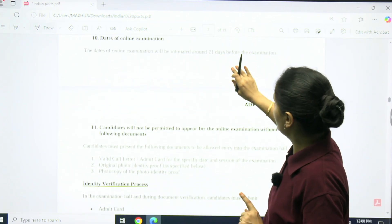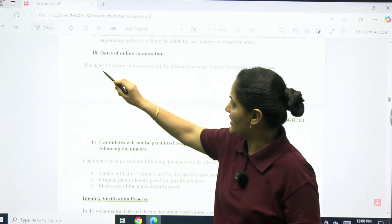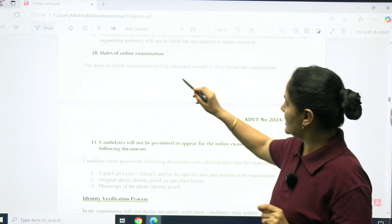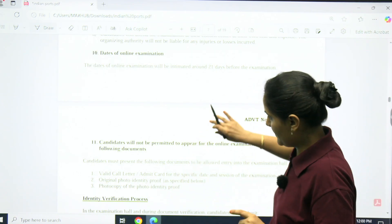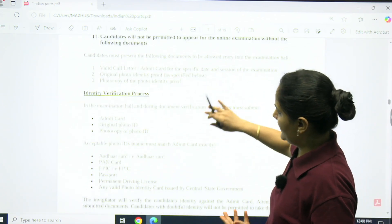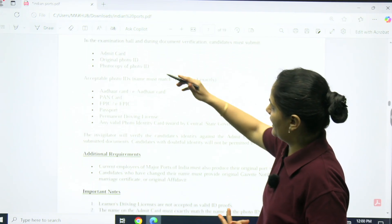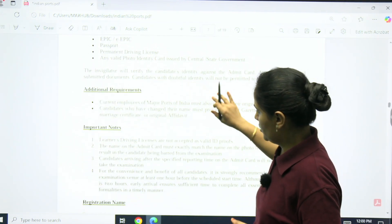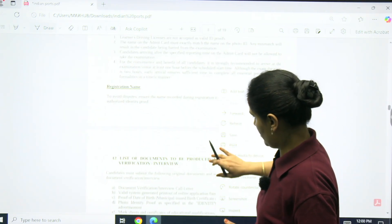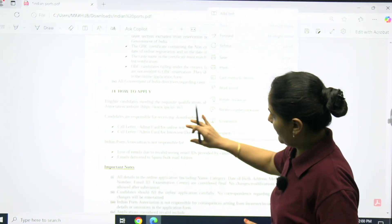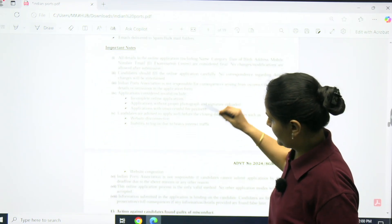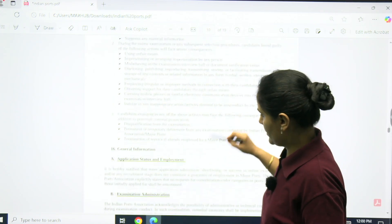Dates of online examination: it's not mentioned, but they mention the dates will be intimated around 21 days before the examination. Identification, admit card, and all these things you need to show and submit. This is a 19-page PDF. You can see more details, how to apply, every step is mentioned.